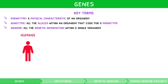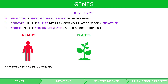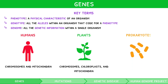In humans, the genome includes all of the chromosomes and the additional DNA within mitochondria. In plants, this includes all of the chromosomes and the additional DNA within their chloroplasts and mitochondria. In prokaryotes, this includes the single chromosome and DNA contained within plasmids.